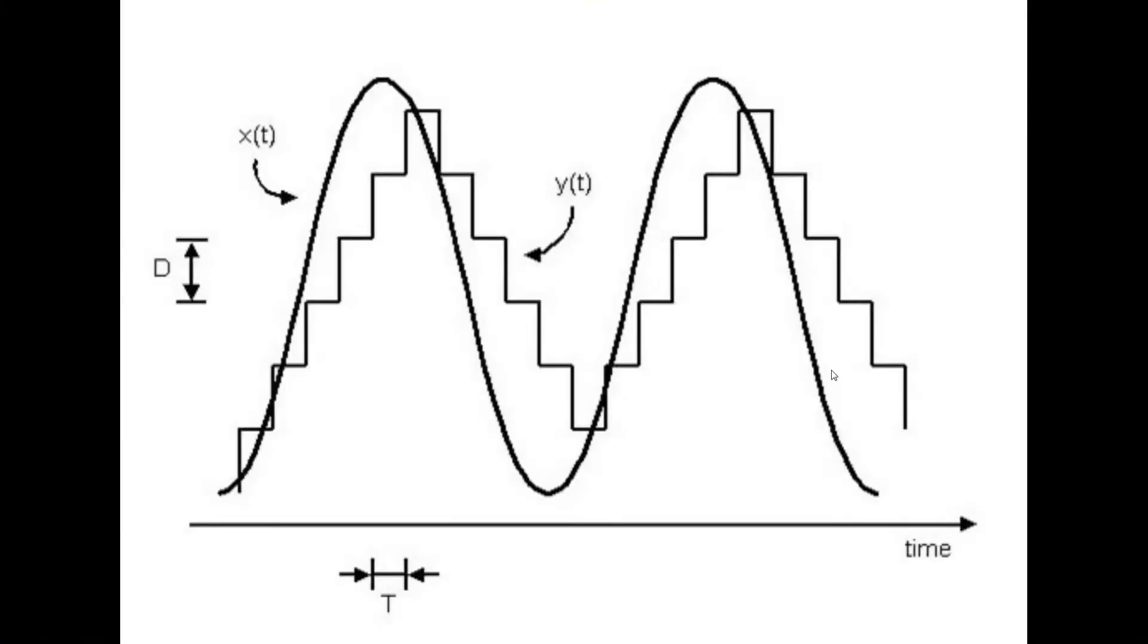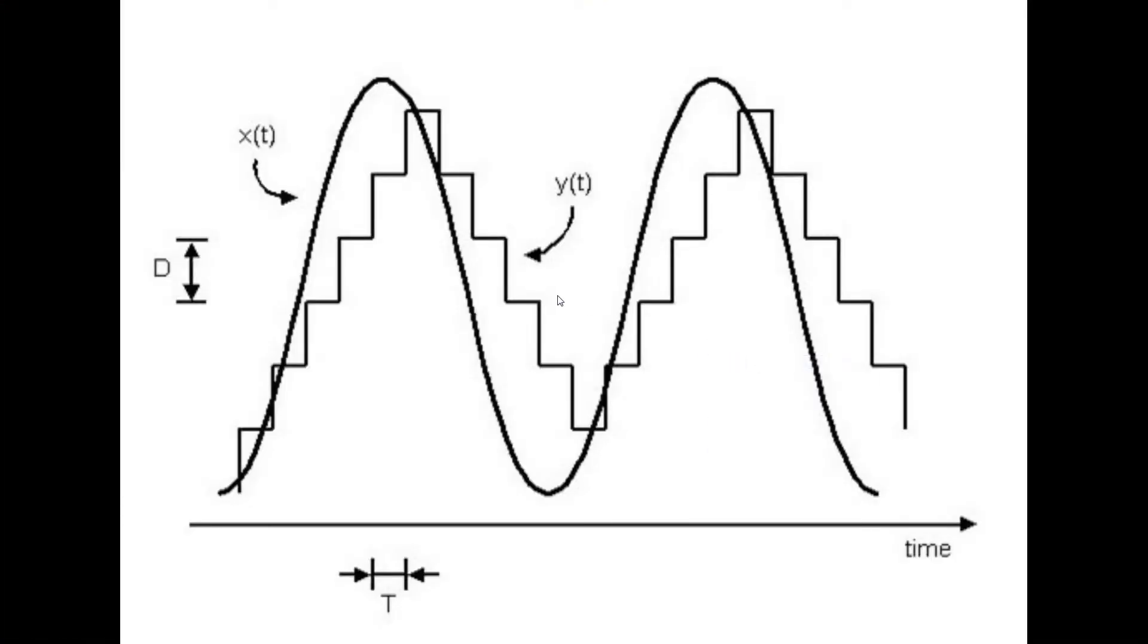So to start, what is delta modulation? Delta modulation is basically steps. So here we have this analog signal approximating to our voice. Our voice is just a set of multiple frequencies that we see.